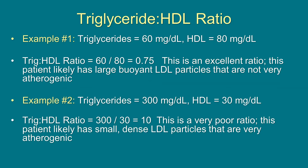Here we'll do two examples of triglyceride-to-HDL ratio. In patient number one, they have a triglyceride value of 60 and an HDL of 80. To calculate the ratio, we simply take the triglyceride value and divide it by the HDL value. In this example, we get a ratio of 0.75, which is a very good ratio, indicating this patient likely has the more large and buoyant, more innocuous LDL particle size — not very atherogenic. In the second example, the patient has a triglyceride level of 300 with an HDL of 30. This gives us a triglyceride-to-HDL ratio of 10, which is a very poor, high-risk ratio. It's very likely that this patient has the more small, dense, atherogenic LDL particle size.